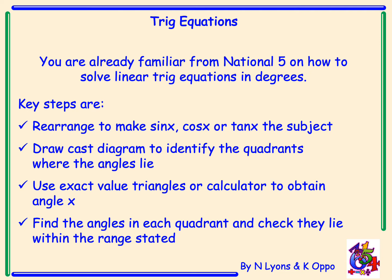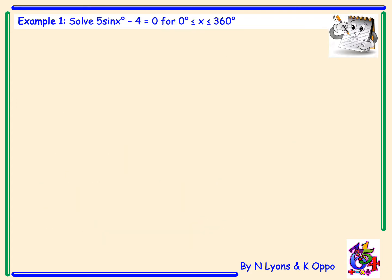There are some key steps that we have to follow. We need to make sure we rearrange sine, cos, or tan x to make them the subject. We need to ensure we have a CAST diagram drawn to identify the quadrants and where the angles lie. We have to either use exact value triangles or a calculator to obtain the angle x, and then finally find the angles in each quadrant, checking they lie within the stated range.